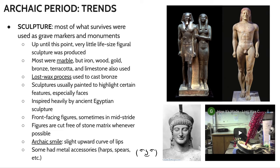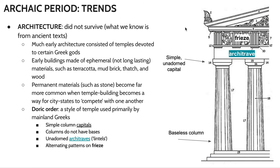Permanent materials like stone became far more common later, typically during the Classical period, when we started seeing these rivalries between the city-states. At this point the city-states are kind of trying to one-up each other, entering friendly and sometimes not-so-friendly competitions. One of the ways they show off their material wealth is by using expensive materials like marble to create their temples and statuary.